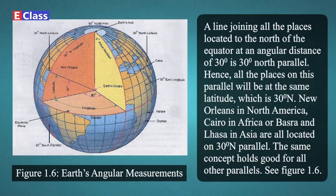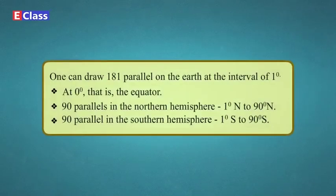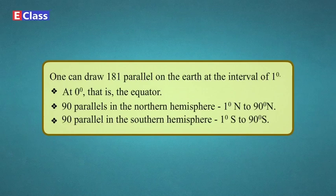The same concept holds good for all other parallels. See Figure 1.6. One can draw 181 parallels on the earth at the interval of 1 degree: at 0 degree (the equator), 90 parallels in the northern hemisphere (1°N to 90°N), and 90 parallels in the southern hemisphere (1°S to 90°S).